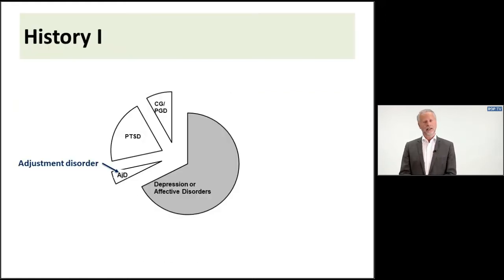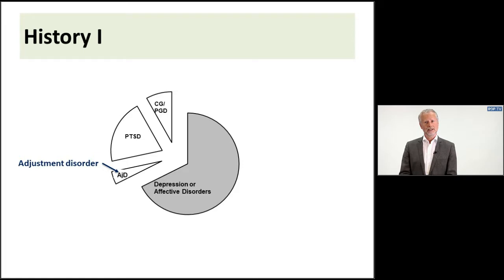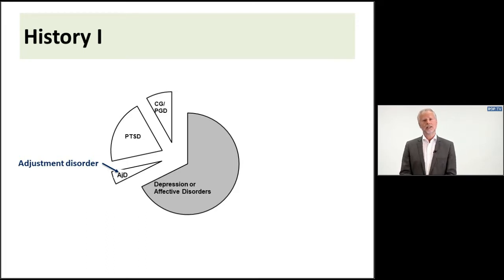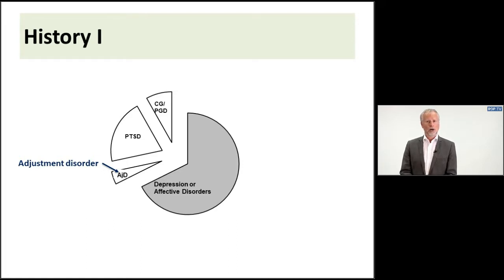Some history at the beginning. You'll find here a cake of different disorders, but previously this had been all the cake of affective or depressive disorders. And some slices had been taken out during the last decades, namely PTSD, or complicated grief, prolonged grief disorder, or the condition we are talking about today, adjustment disorder.